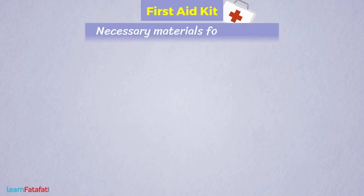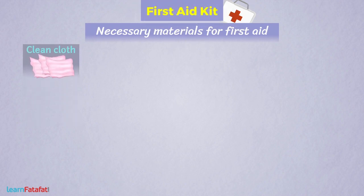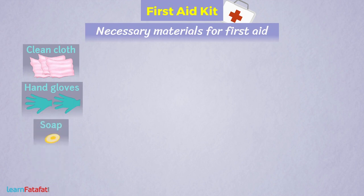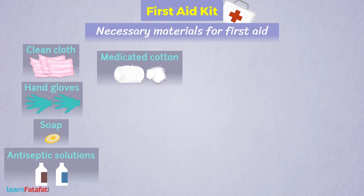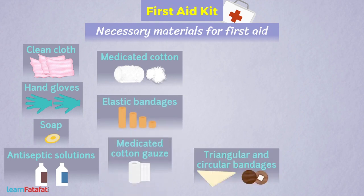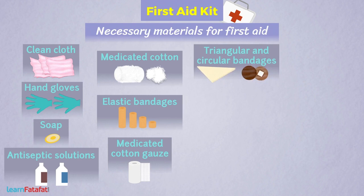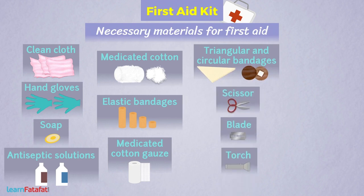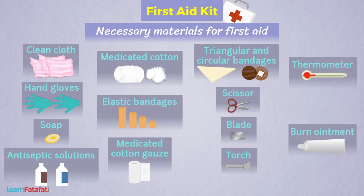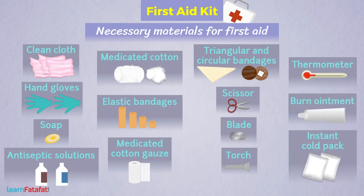First Aid Kit. To offer first aid, it is essential to have necessary materials with us — together we call them the First Aid Kit. It includes clean cloth, hand gloves, soap, antiseptic solution, medicated cotton, elastic bandages of different sizes, medicated cotton gauze, triangular and circular bandages, scissors, blade, torch, thermometer, burn ointment, and instant cold pack.